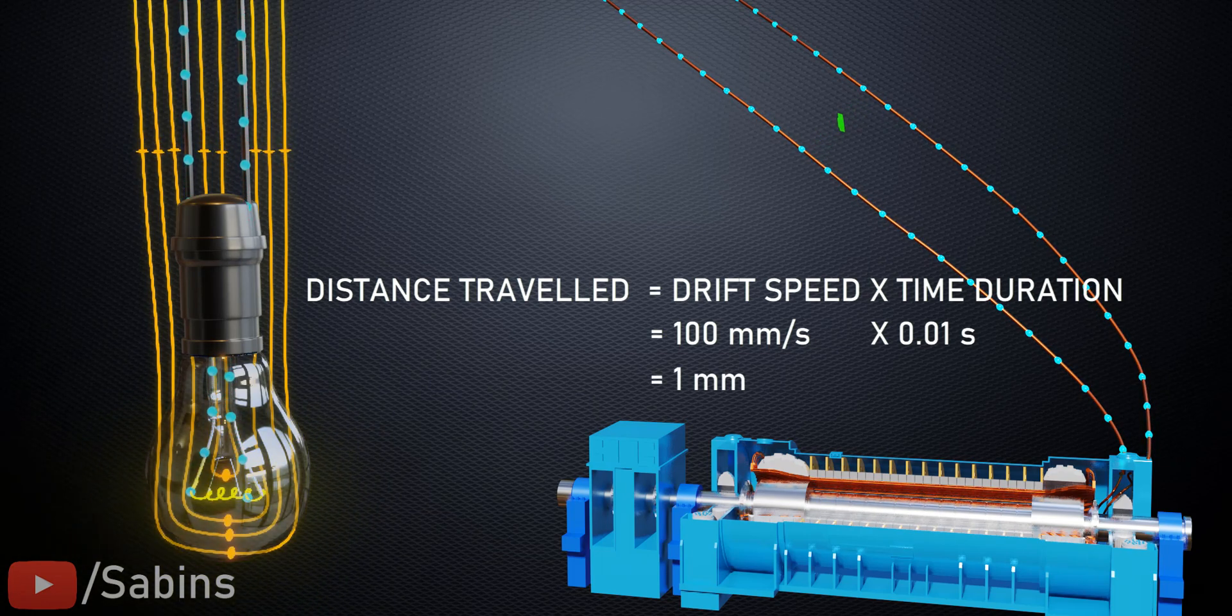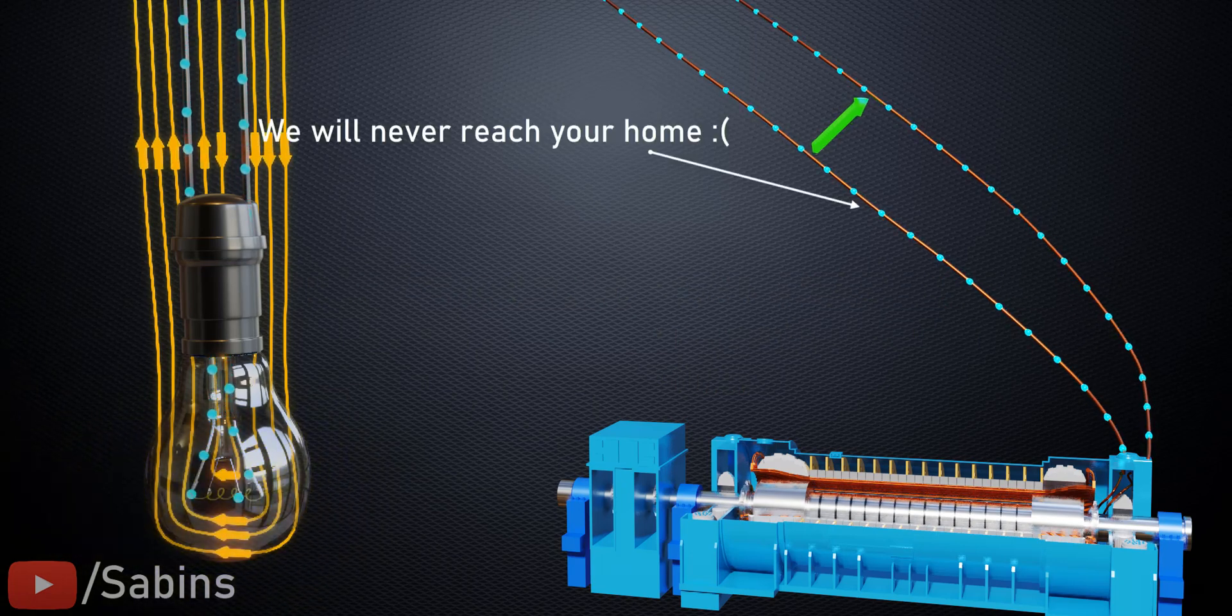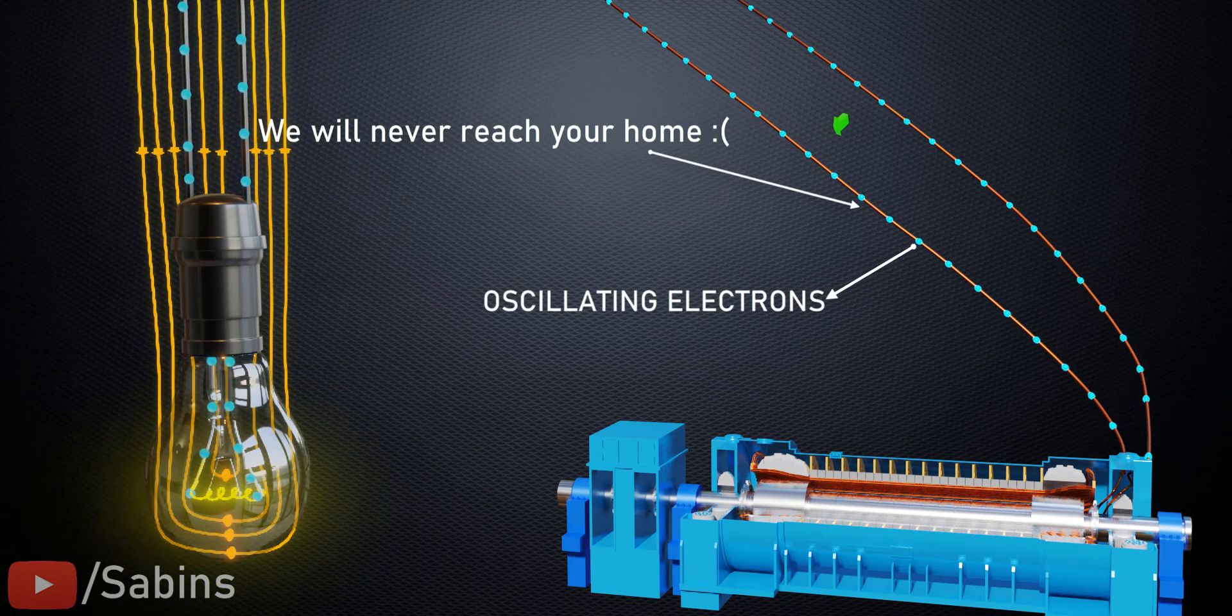Which means the electrons that leave the power plant will never reach your appliances, they just oscillate in the mean position.